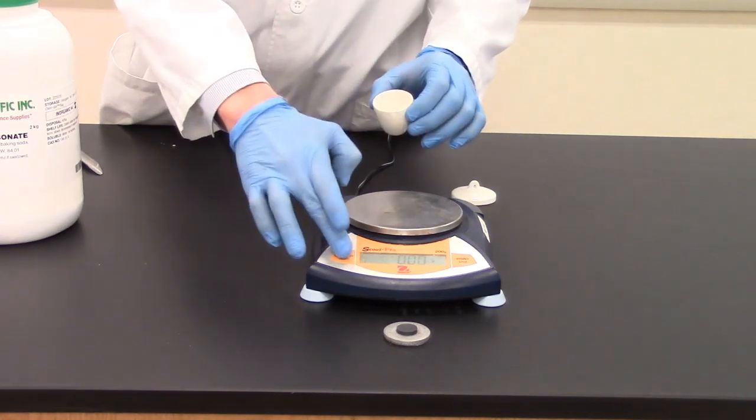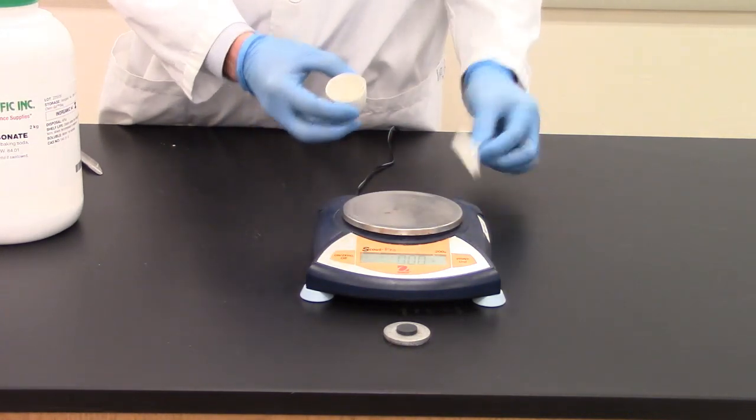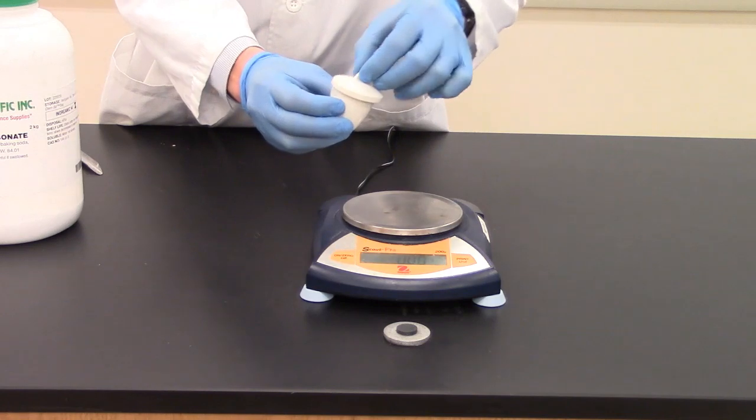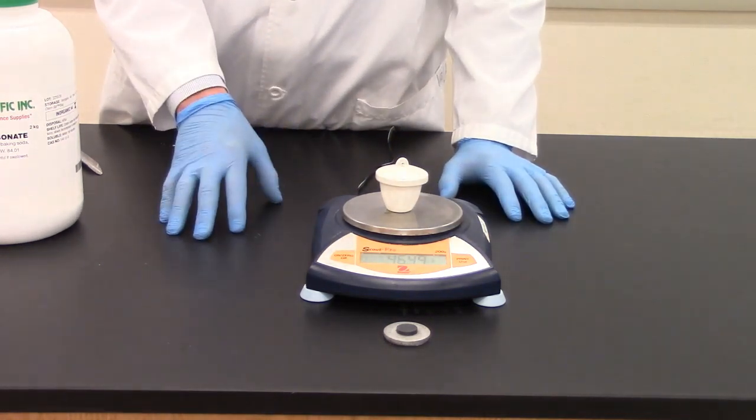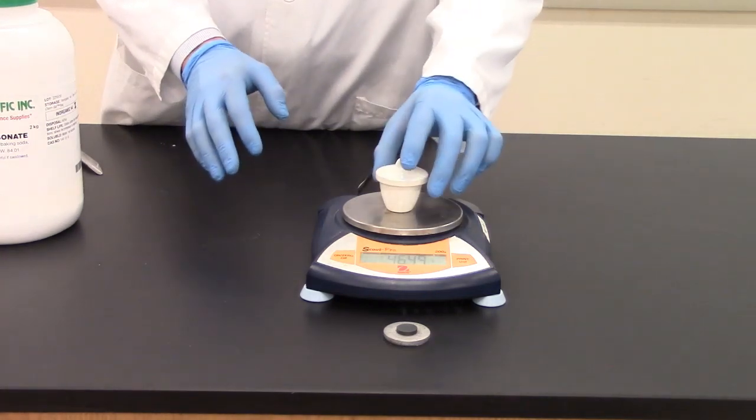Alright, and then I'm going to zero out my balance and place both the crucible and the lid on the balance to get a measurement. So I've got my mass of the crucible. Yours is going to be different.